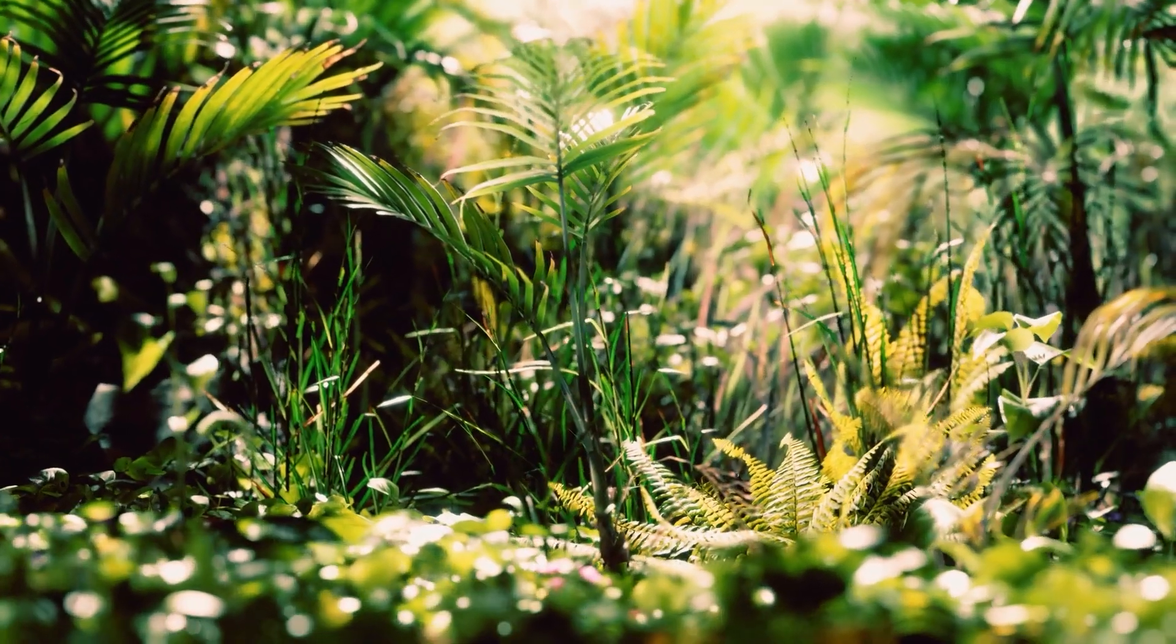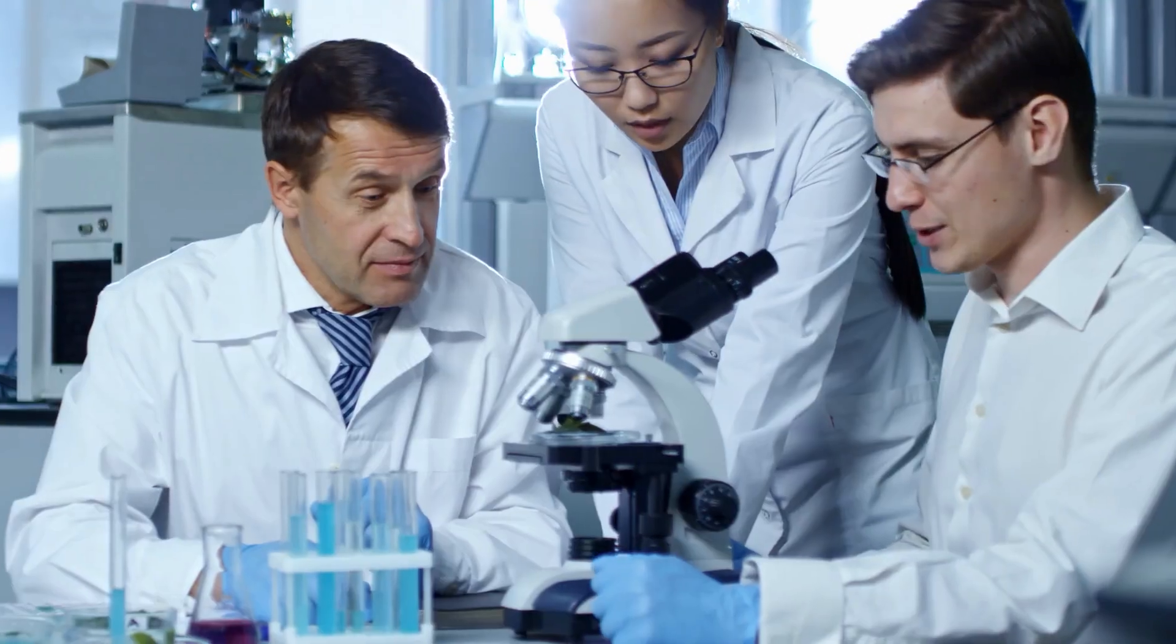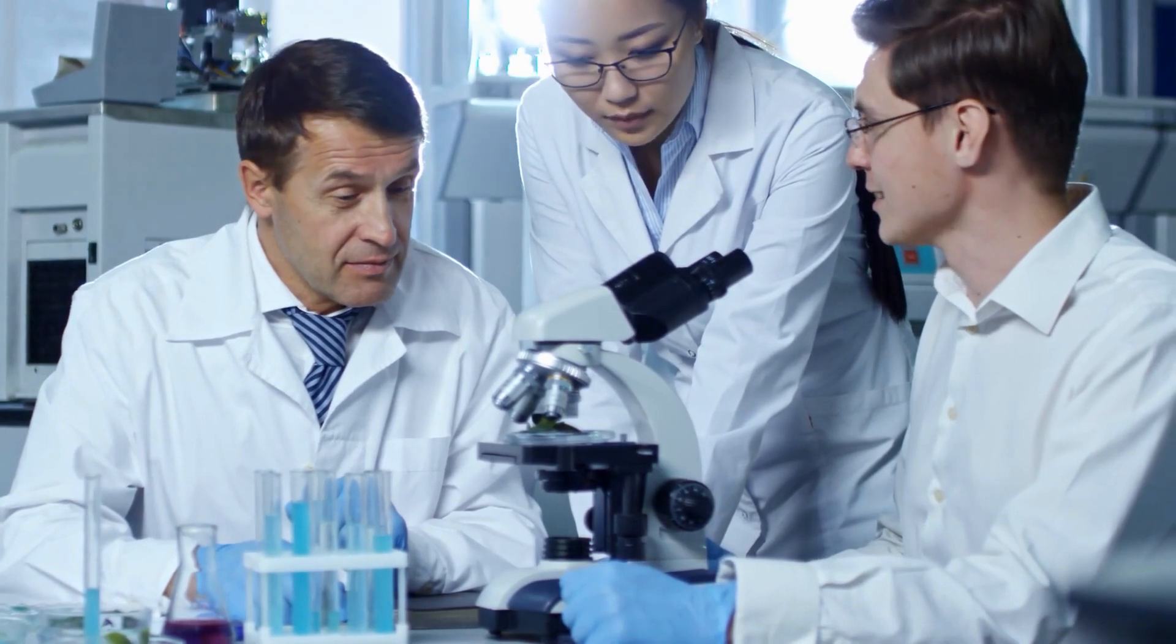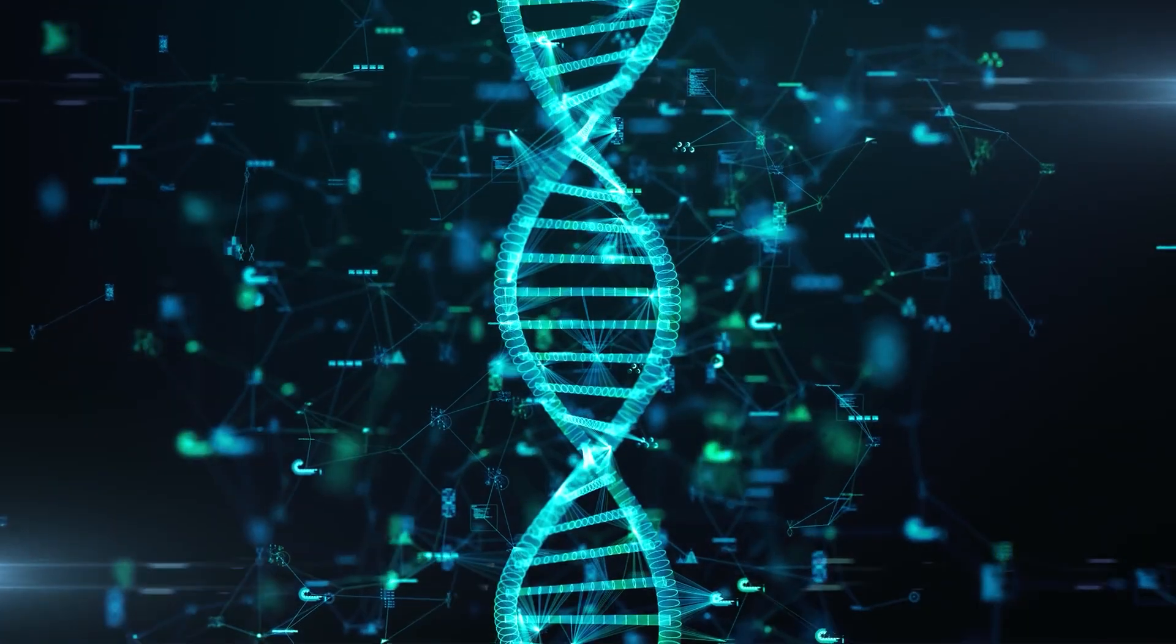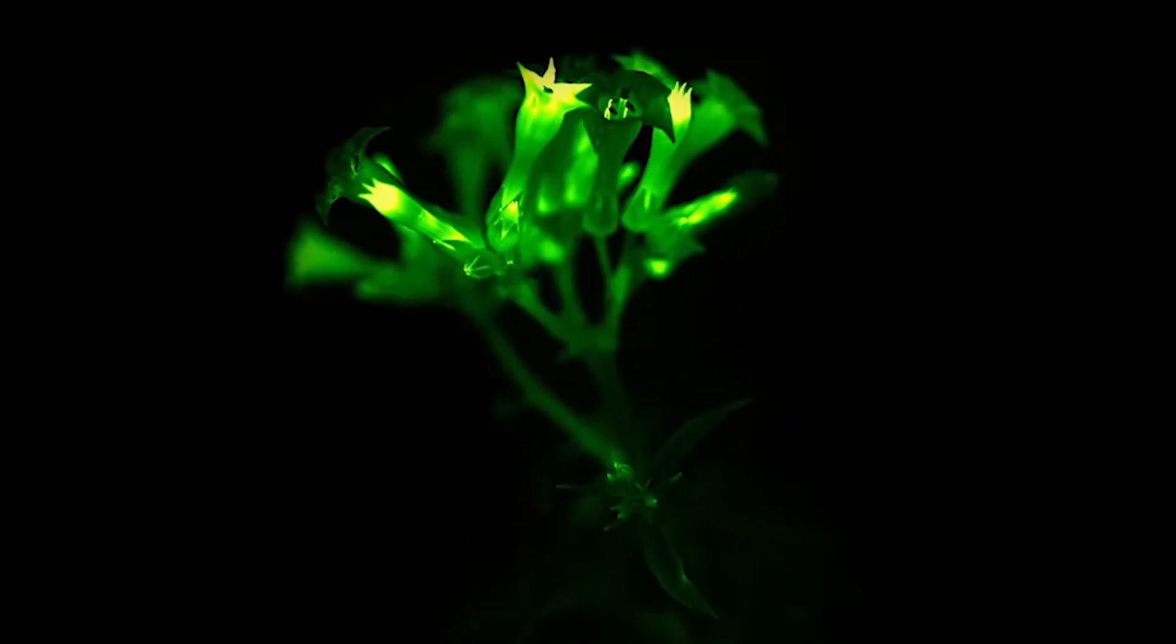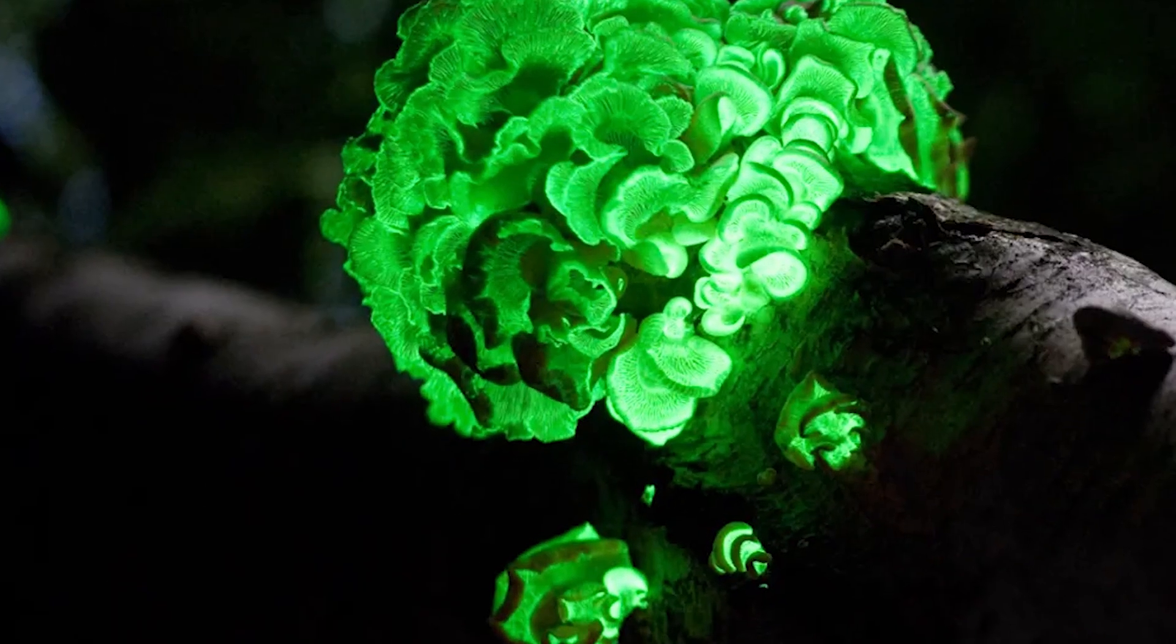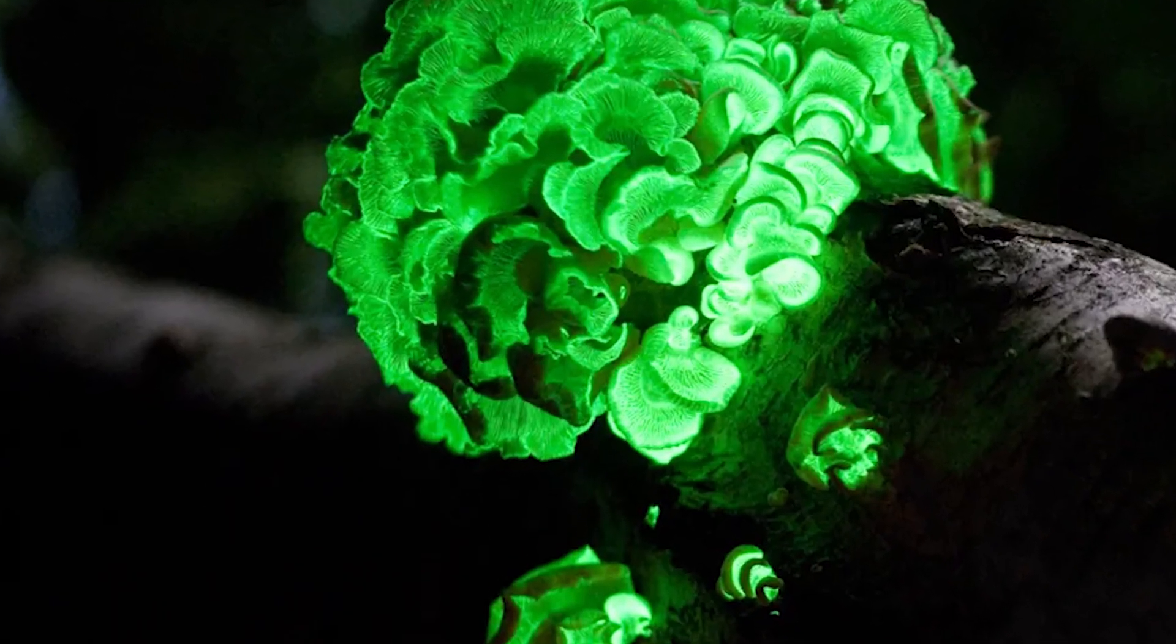Plants, on the other hand, are not naturally bioluminescent, but the power of science has allowed for some workarounds. Gene editing has been used to create glow-in-the-dark tobacco plants, while researchers have also been able to make wood glow by infiltrating it with bioluminescent fungi.